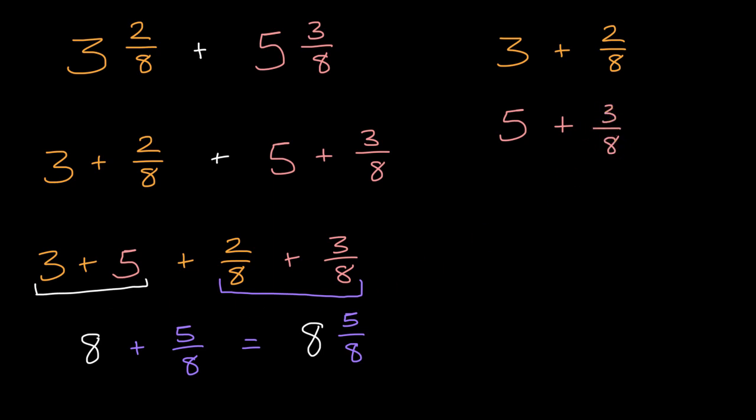And then we can add vertically like this, where first we can look at the fractional part. Two-eighths plus three-eighths is going to be equal to five-eighths. And then three plus five is going to be equal to eight. And if you add these two together, eight and five-eighths, you get eight and five-eighths.